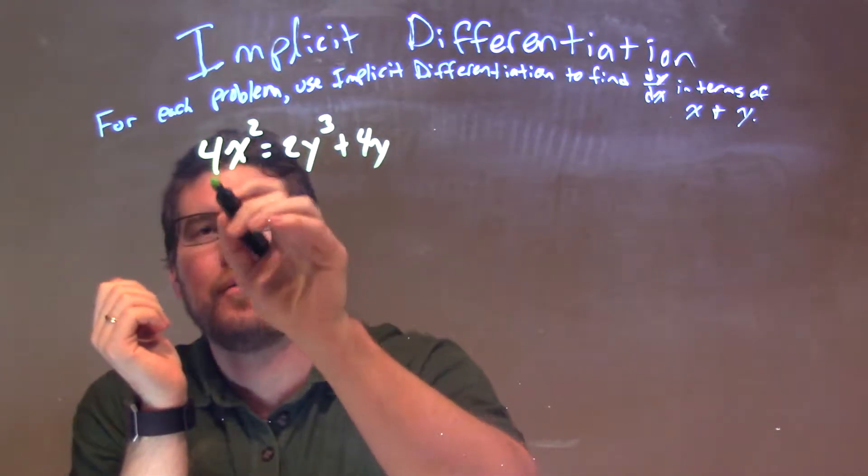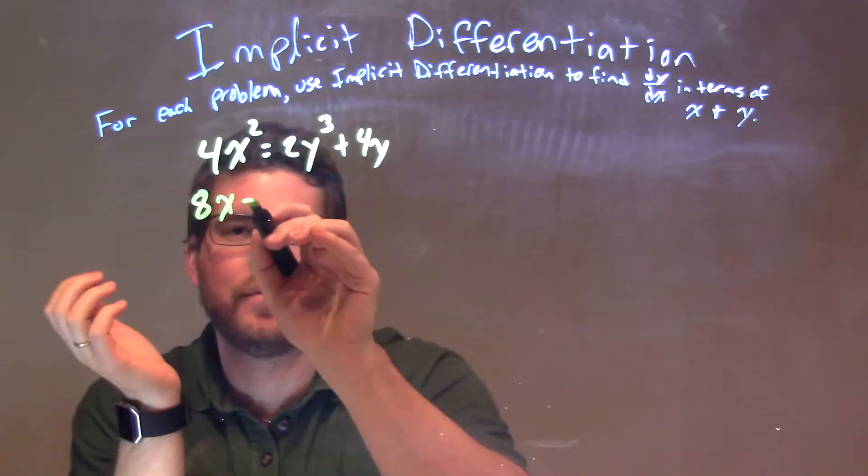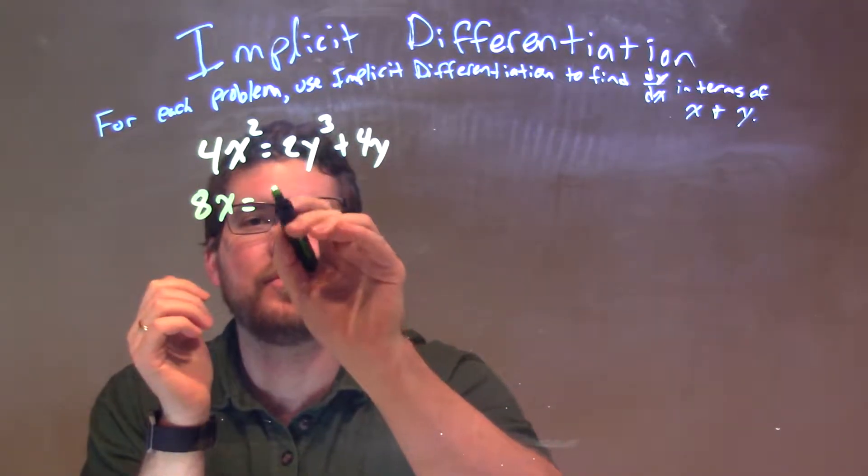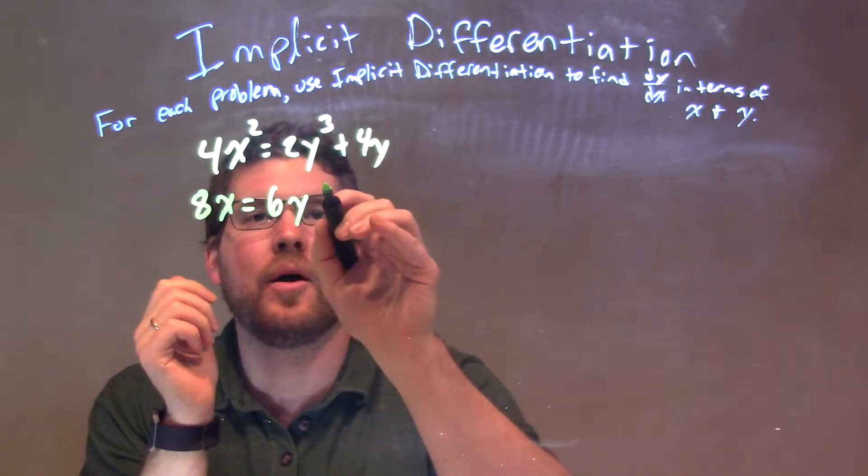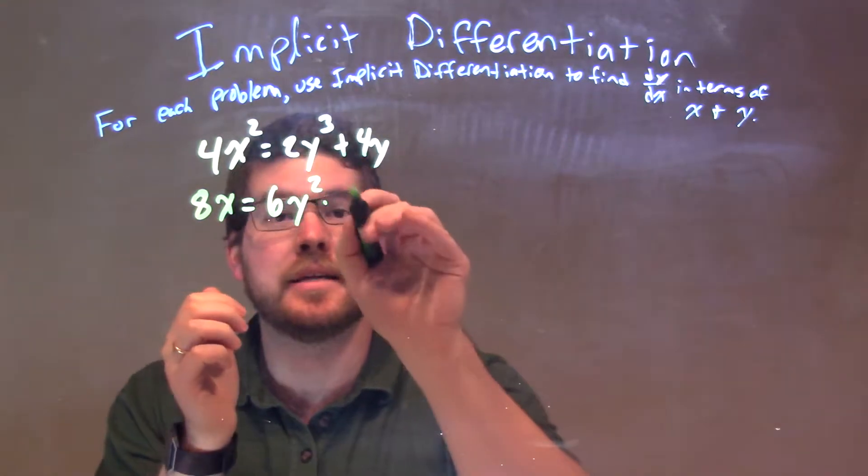So, 2 times 4, power comes down, we have 8 here, x squared minus 1 to the first power. Same thing with the y's, but we're going to have a little extra step. 3 times 2 is 6, y squared minus 1, and we have to the second power, times the derivative of y, which is dy/dx.